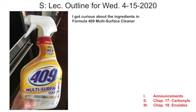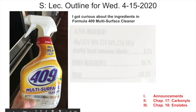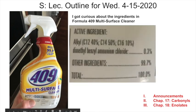Happy hump day! I was cleaning the counters and I saw my Formula 409 bottle has a label that says it kills 99.9% of bacteria and viruses, so I thought, let's look at the active ingredients. We see the active ingredient is an alkyl C12 40%, C14 50%, C16 10% dimethylbenzylammonium chloride — 0.3% active ingredient — that's what's killing the bacteria and viruses.